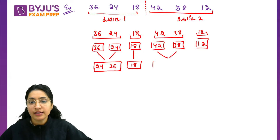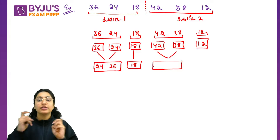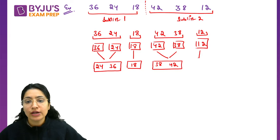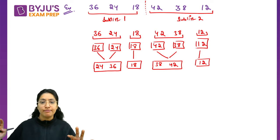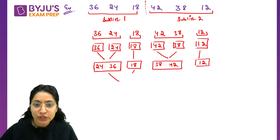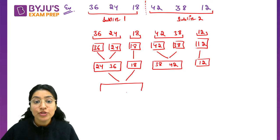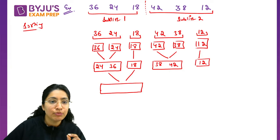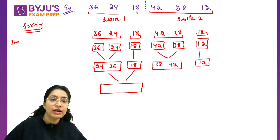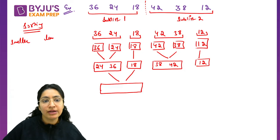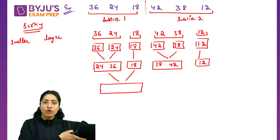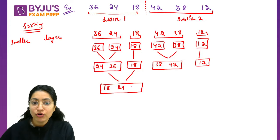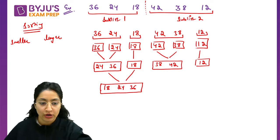18 has no comparison, keep 18 as it is. Next, compare 42 and 38. Sort and arrange them - smaller left, larger right. 38 should be left, 42 should be right. 12 I kept as it is because it was single, no comparison. Now combine these two sublists. Sort them. This way I can simply sort it.